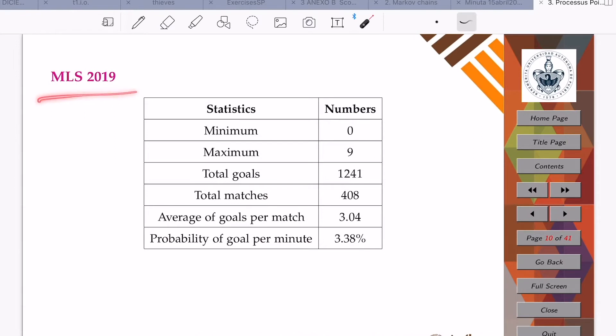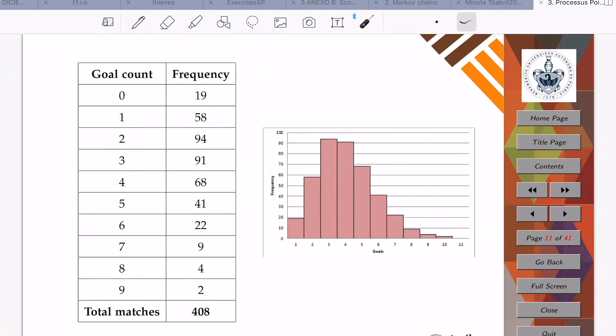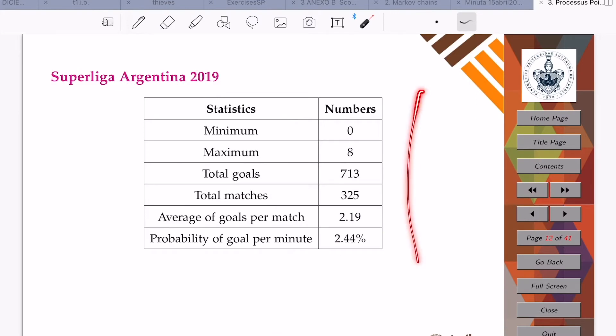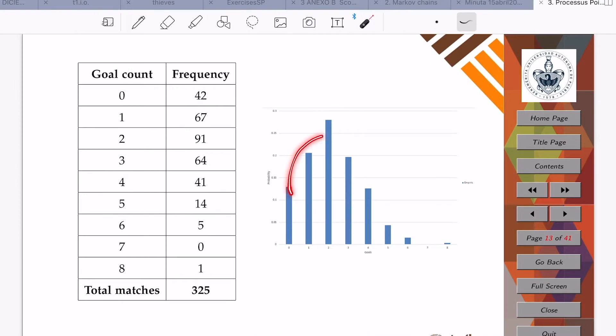The same thing happens with the Major League Soccer during season 2019. The same histogram emerges. For the Superliga Argentina, we can see the exact same thing and the exact same histogram of frequencies.